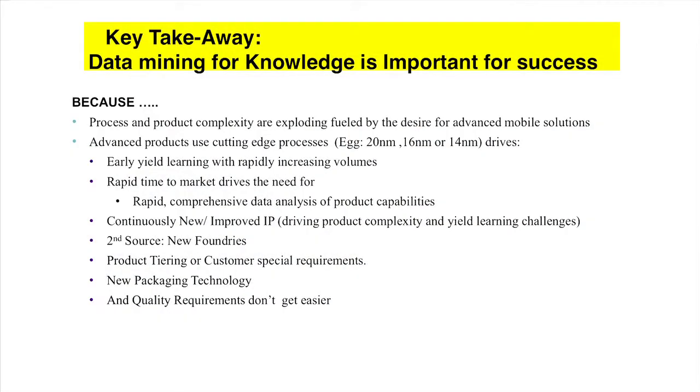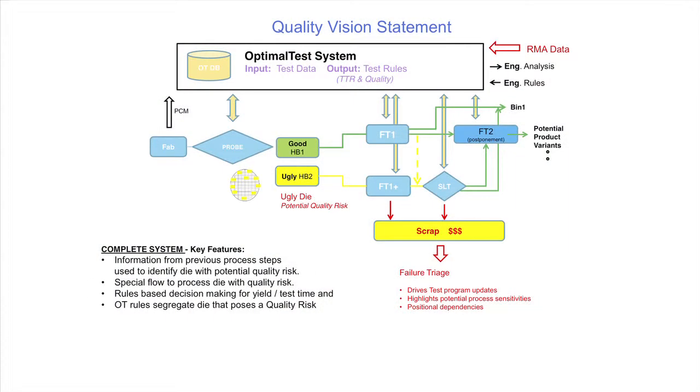The key takeaways: process complexity and product complexity are exploding. Data volume is exploding faster than either. To deal with yield real-time in early manufacturing, you have to have a clear understanding of all the parameters from wafer sort to the customer. Bringing it back to this one slide: OT's tool is about end-to-end systems data. It allows me to go from wafer sort to the customer and back again, with active control mechanisms all the way along. That's why you have to have a tool that allows you to data mine across a very wide metric of data rapidly and on a timely basis.